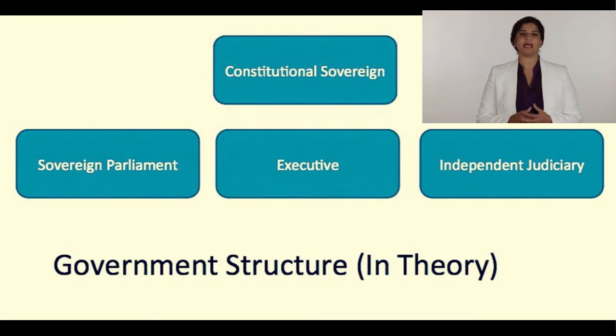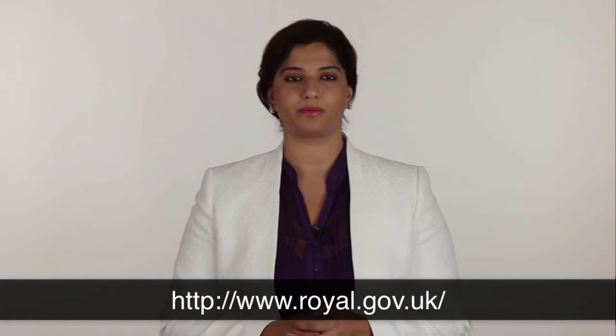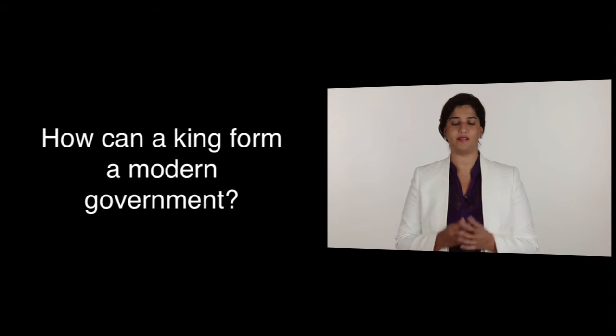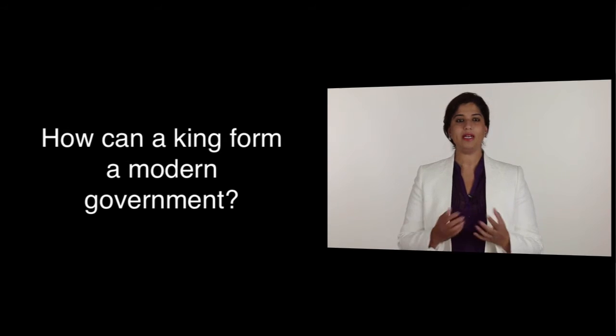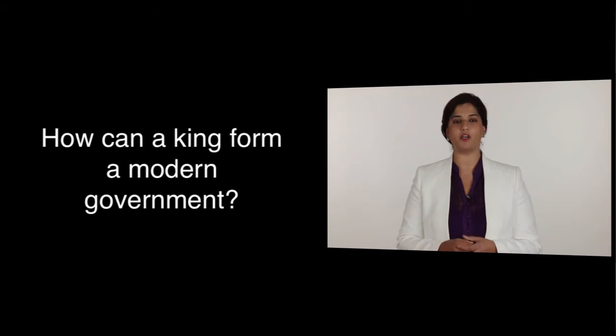The British sovereign can be seen as having two roles: head of state and head of the nation. As head of state, the Queen plays her limited role in governance of the country following a tradition that has evolved over a thousand years. As head of the nation, she provides for and promotes the British identity. You can find more information about these roles on the official website of the British monarch. Do you think more traditional or non-constitutional monarchs should follow the Queen's lead and establish modern democracies in their countries? What kind of challenges will the non-constitutional monarch face in this process?